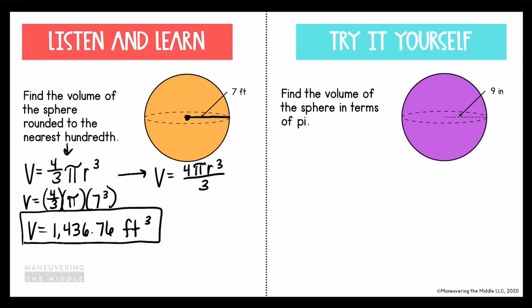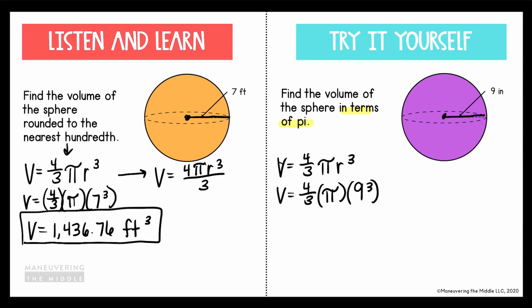Now try the one at the right. It says find the volume of the sphere in terms of pi. We solve this the same way, starting with the formula: 4 thirds pi r cubed. Looking at the sphere, the radius is 9. So substituting: 4 thirds times pi times 9 cubed. 'In terms of pi' means our solution will have pi written in it, so we multiply everything except pi. Multiplying 4 thirds times 9 to the third power gives 972. Bringing down pi, the volume is 972 pi inches cubed.